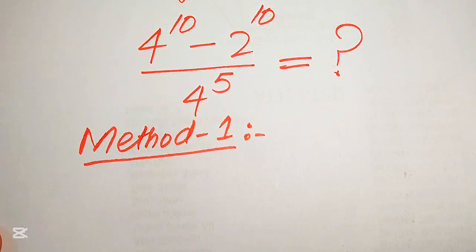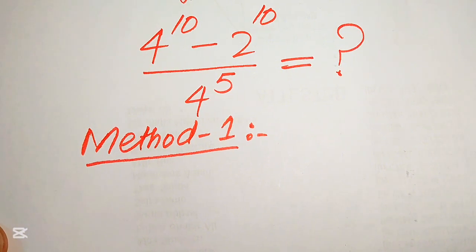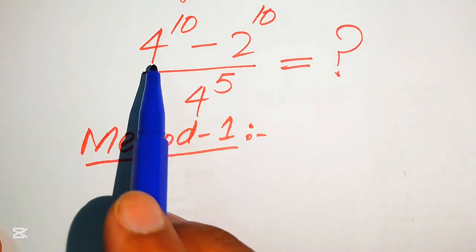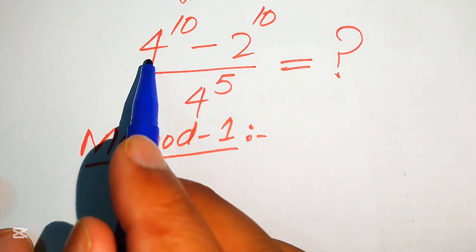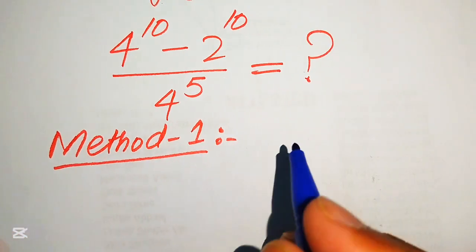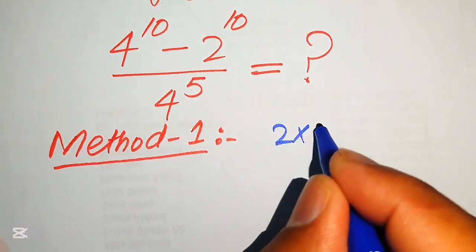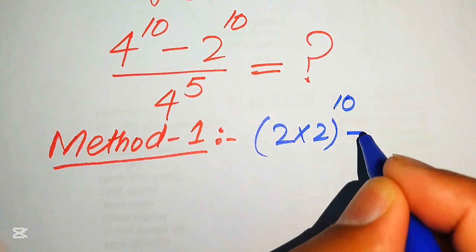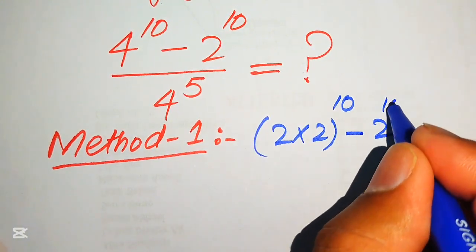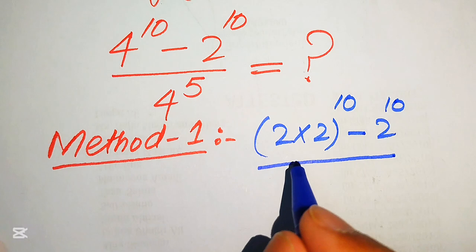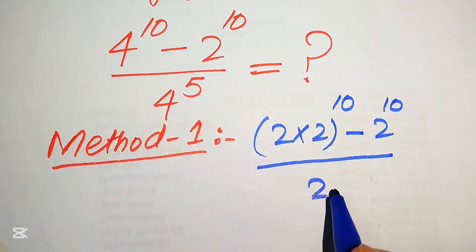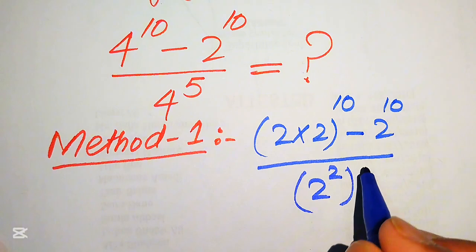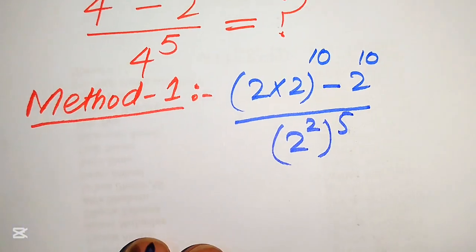In the first method, we focus on the base of each term. We rewrite 4 as 2 multiplied by 2, with exponent 10, minus 2 to the power of 10, divided by 4 written as 2 squared with whole exponent 5.